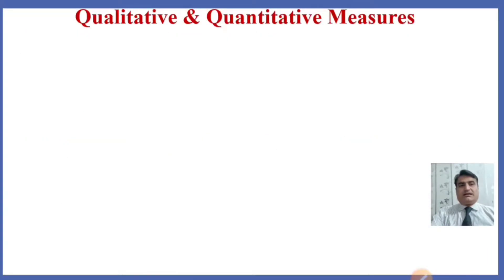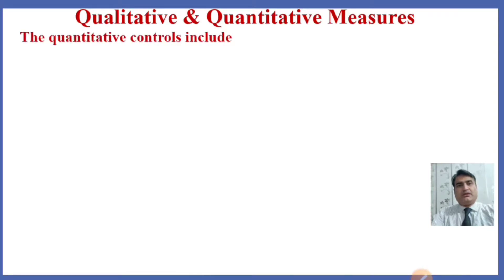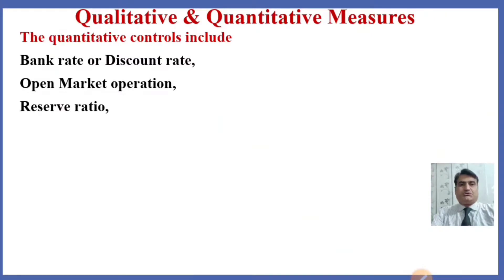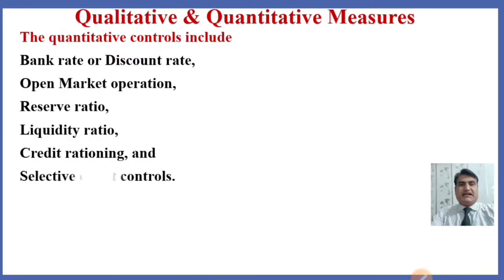As we learned, monetary policy is the set of quantitative and qualitative measures. The quantitative measures or quantitative controls include the bank rate or discount rate, open market operations, reserve ratio, liquidity ratio, credit rationing, and selective credit controls.